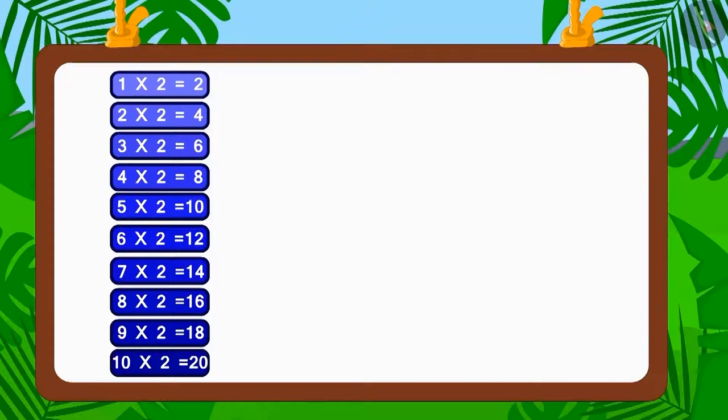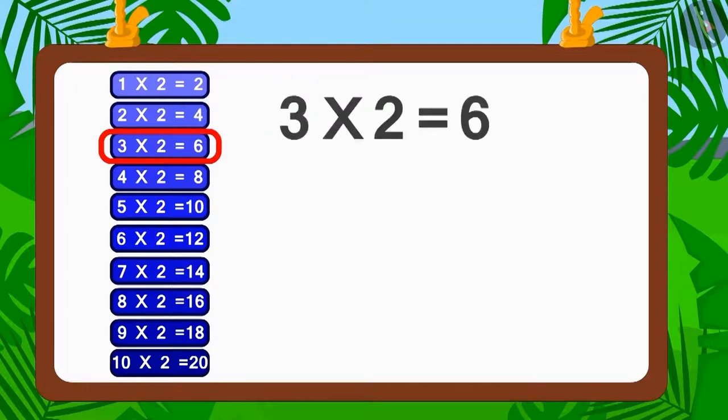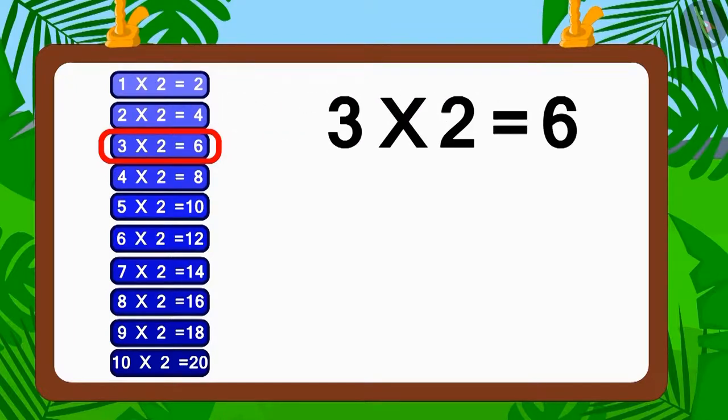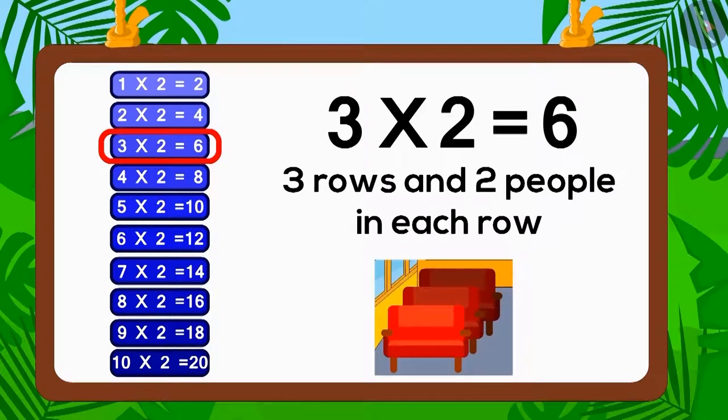Does the number six appear in the table of two? Yes, three multiplied by two is six. Therefore, two is the factor of six. So, if two people sit in each of three rows, how many people would be able to sit? Six.